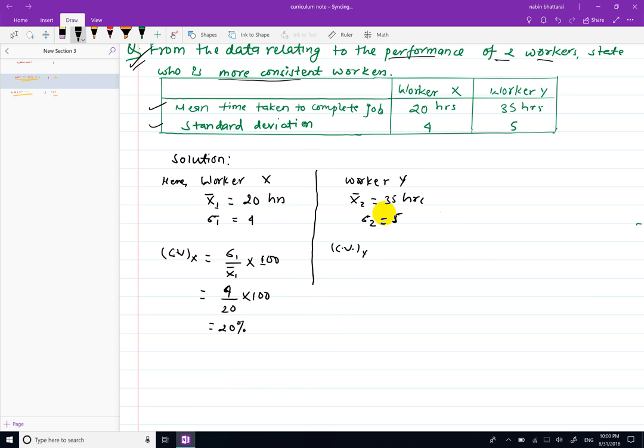CV for Worker Y equals sigma 2 over X2-bar times 100, which is 5 over 35 times 100.